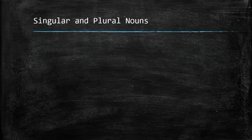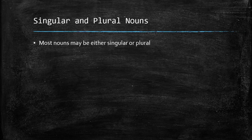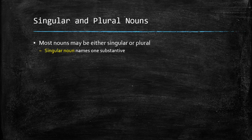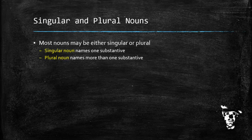Now let's take a look at a concept a lot of you are probably pretty familiar with, so we're not going to spend a lot of time on it. I'm talking about singular versus plural nouns. Most nouns may be either singular or plural, with a singular noun naming just one substantive while a plural noun names more than one substantive. Go ahead and try the next exercise where you distinguish singular nouns from plural nouns.